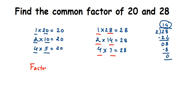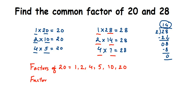Let's write down the factors. Factors of 20: 1, 2, 4, 5, 10, and 20. Factors of 28: 1, 2, 4, 7, 14, and 28.